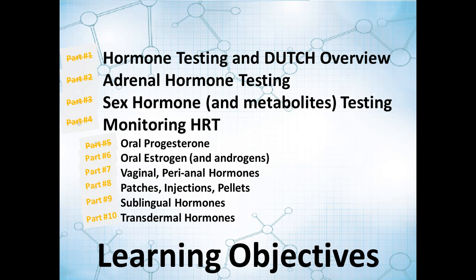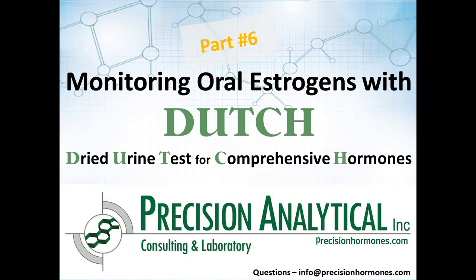In the next videos, we're going to look at vaginal hormones, patches, injections, pellets, sublinguals, and transdermals — delivery methods often chosen specifically to avoid liver metabolism. These are good options, but they come with their own caveats for hormone testing. I encourage you to continue watching for a more comprehensive overview of HRT and laboratory testing.